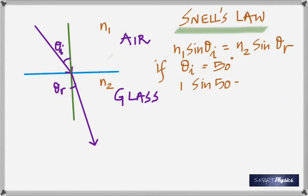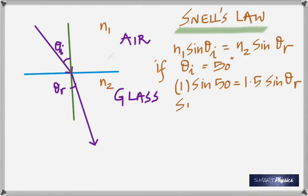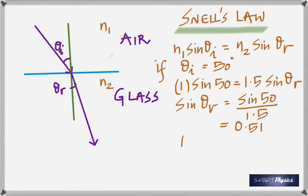I'll show something. If theta i is 50 degrees, calculate theta r for light going from air into glass (refractive index 1.5). You just need a few seconds. Using Snell's law: 1 × sin 50° = 1.5 × sin θᵣ, giving θᵣ = 30.71 degrees.